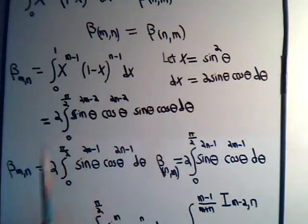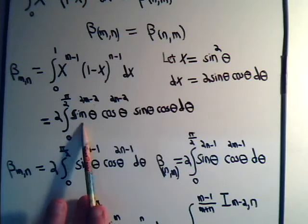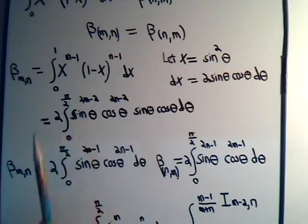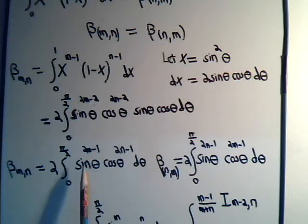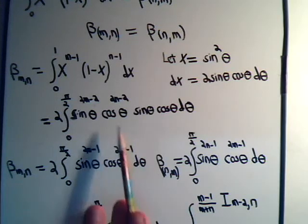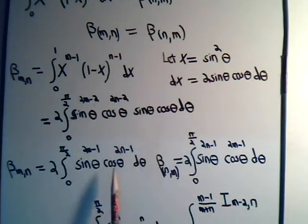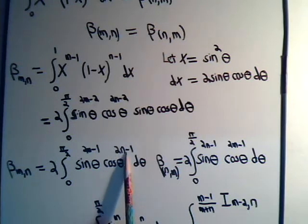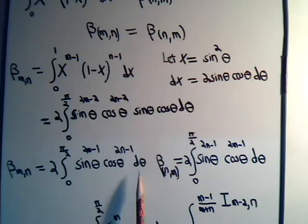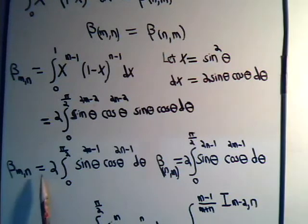And this then becomes this integral, 2 times integral from 0 to π over 2. Multiply these two together, I have the sine of theta to the 2m minus 1 power, and now I have the cosine of theta to the 2m minus 1 power, d theta. That's a way of expressing the beta function in terms of a trig-type integral.